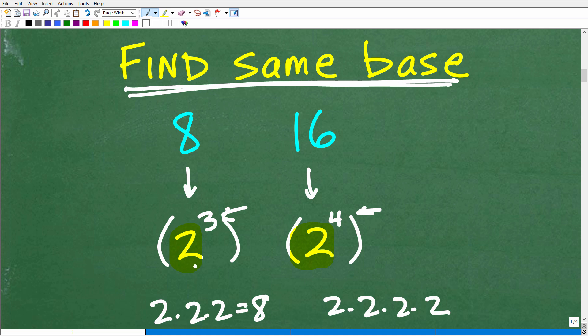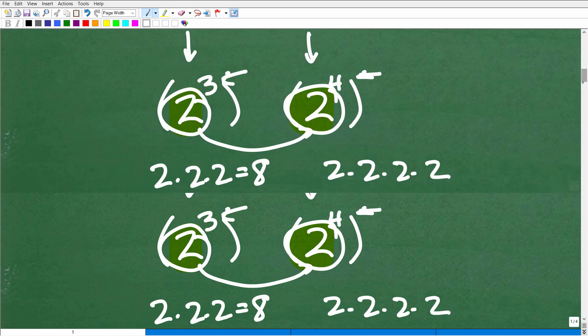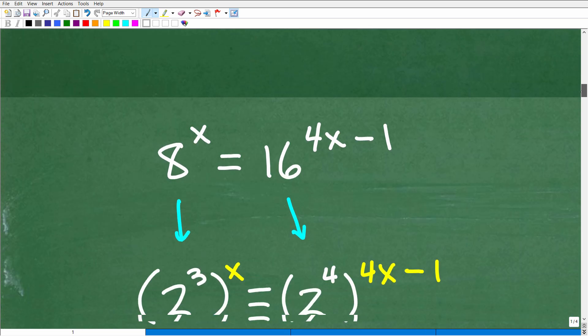So we're going to think of 8 as 2 cubed and 16 as 2 to the fourth. Again, the strategy, the first thing you need to do to solve a problem like this is to try to rewrite these numbers, okay, which are in the base in such a way, of course you're going to have to use powers, so that the bases are the same. All right, so what do we do next? Well, let's go ahead and see that right now.